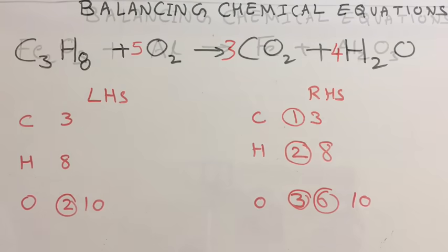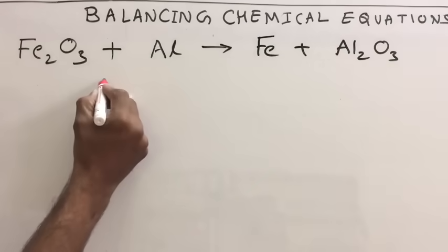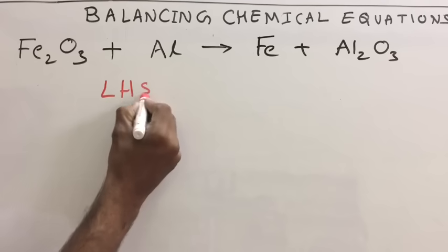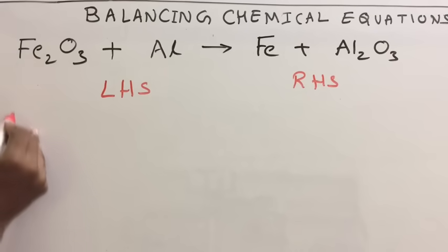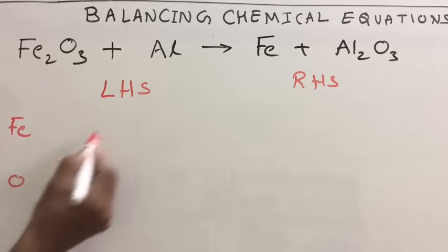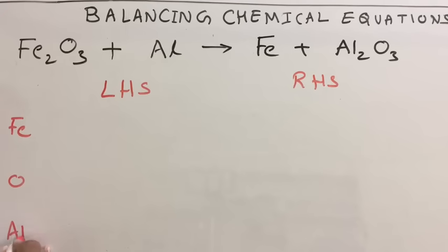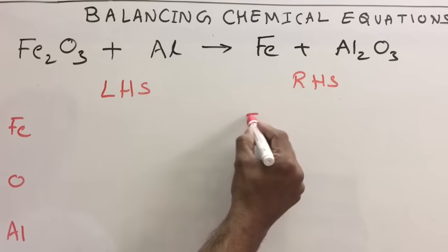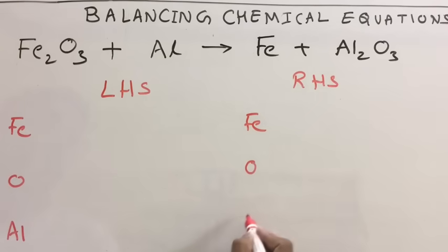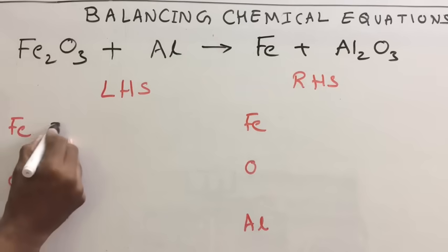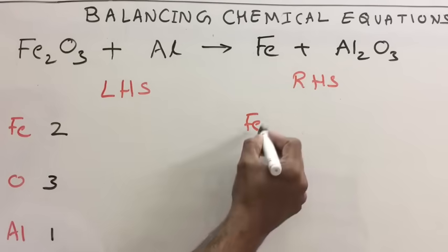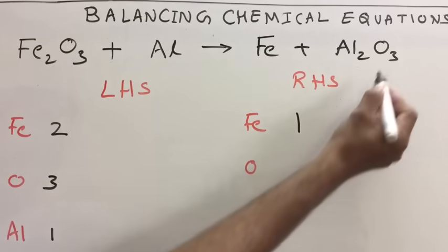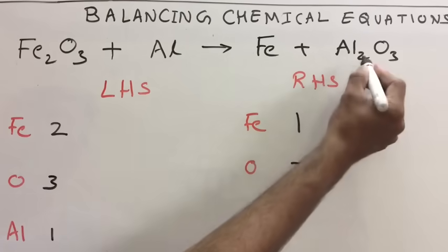One more equation. Write the equation first, then write LHS and RHS. On LHS you have iron, oxygen, and aluminium. Similarly on RHS you have iron, oxygen, and aluminium. Now check number of atoms: for iron you have two on LHS; oxygen, you have O3 meaning three; aluminium one. On RHS: iron one, oxygen three, aluminium Al2 meaning two.